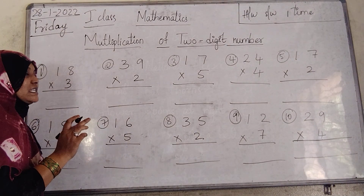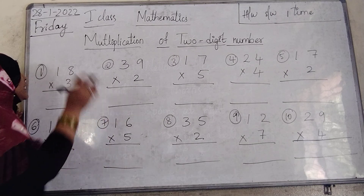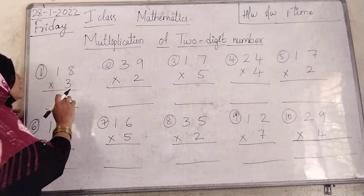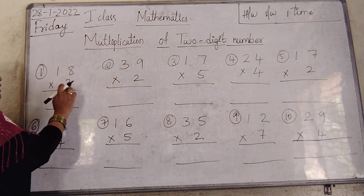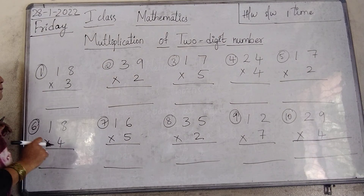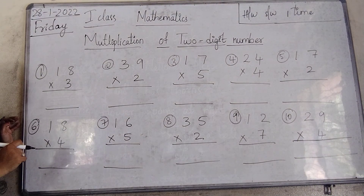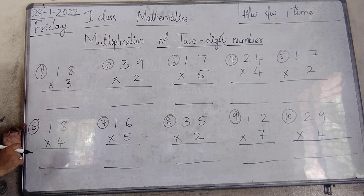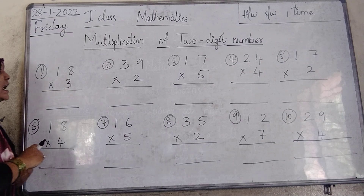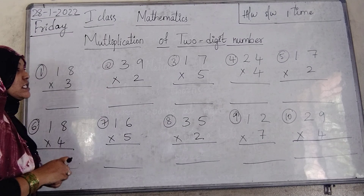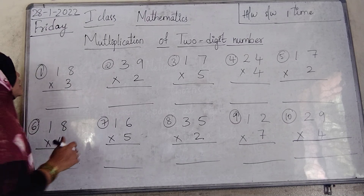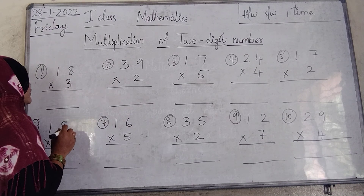First write the table, then you can solve the sum. Say the table of 3: 3 ones are 3, 3 twos are 6, 3 threes are 9, 3 fours are 12, 3 fives are 15, 3 sixes are 18, 3 sevens are 21.